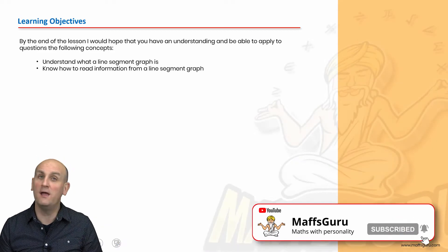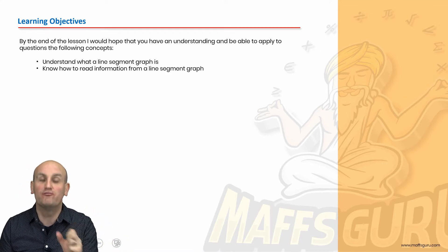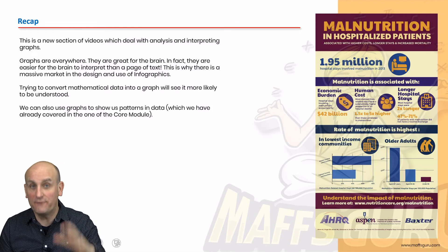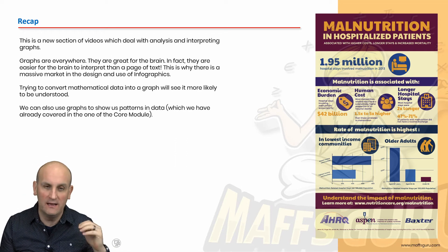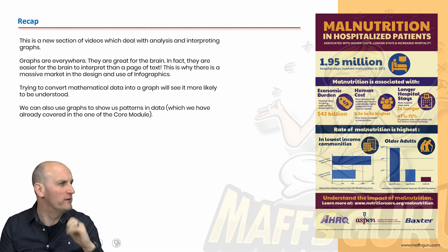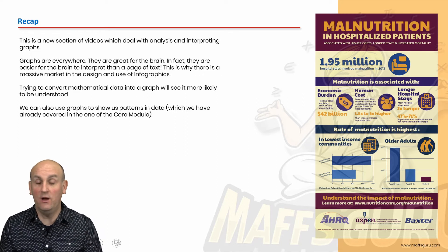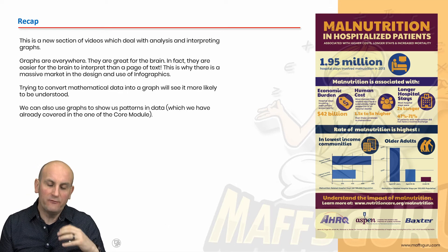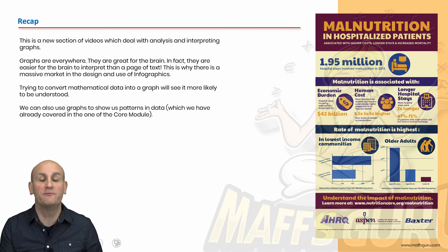So what on earth does it mean by Line Segment Graphs? By the end of this video, I want you to know what a Line Segment Graph is and know how to read information from Line Segment Graphs. Graphs are absolutely everywhere. Our brain loves visual information — infographics are everywhere nowadays because if we want you to actually take in some information, the best way to do it is in some sort of a graph or a table or a diagram. Pages and pages of text, our brain just goes, not interested. But a diagram — give me more. If we can turn numerical data or words into some sort of a graph, our brain is more likely to actually look at it.